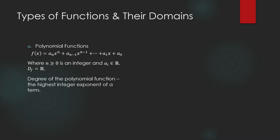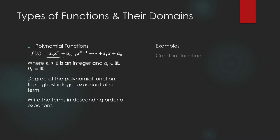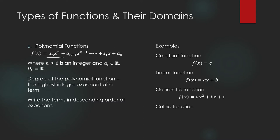A polynomial function has a degree. The degree of a polynomial function is the highest integer exponent of a term. There is a proper way of writing a polynomial function called the standard form, where the terms are written in descending order of exponents, so the first term has the highest integer exponent. A constant function is a degree zero polynomial function, a linear function is degree one, a quadratic is degree two, and a cubic function is degree three.